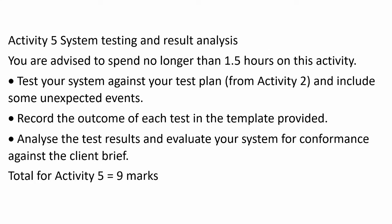Activity five is system testing and result analysis. You should spend no longer than an hour and a half on this activity, and it is worth nine marks. You test your system against your test plan from Activity 2, including some unexpected events — you're just using that test plan from the start. You record the outcome of each test in the template provided in the electronic task booklet, and then analyse the test results and evaluate your system for conformance against the client brief, looking at how your program compared to the specification you wrote early on.